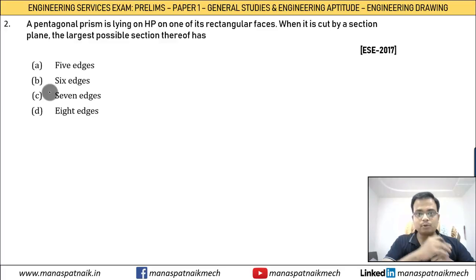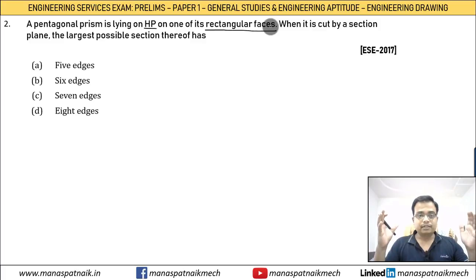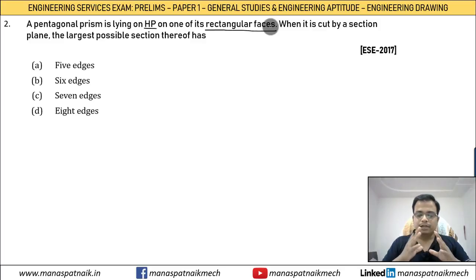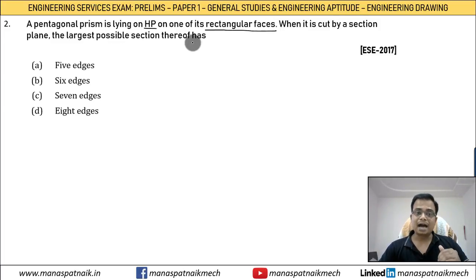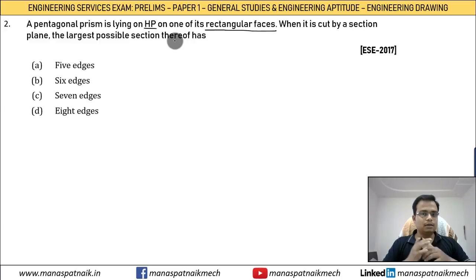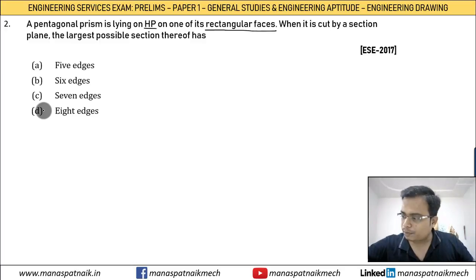Problem number two: we have a pentagonal prism lying on HP on one of its rectangular faces. A pentagonal prism has five rectangular faces. When it is cut by a section plane, the largest possible section has how many sides — five, six, seven, or eight? We need to work that out.